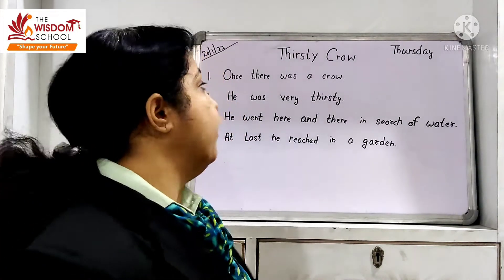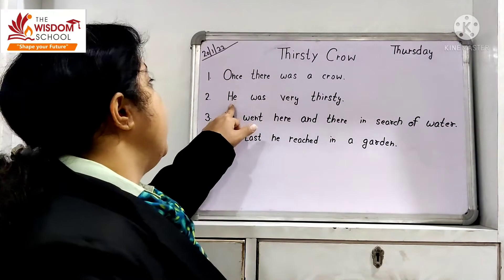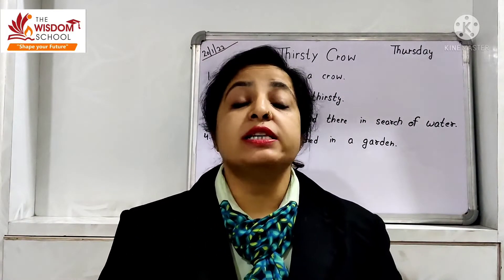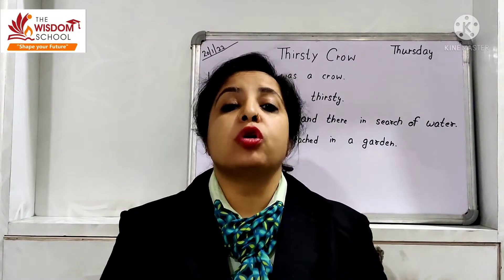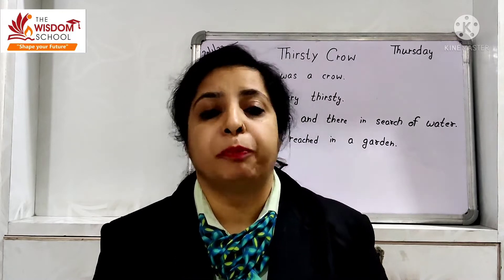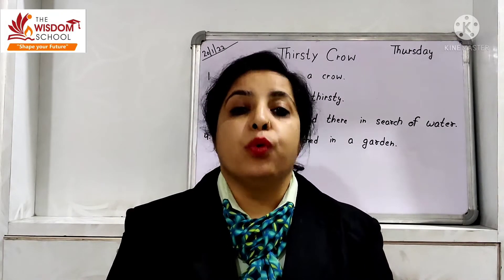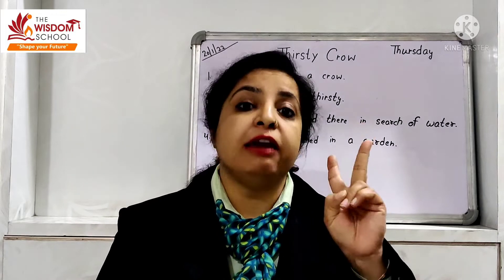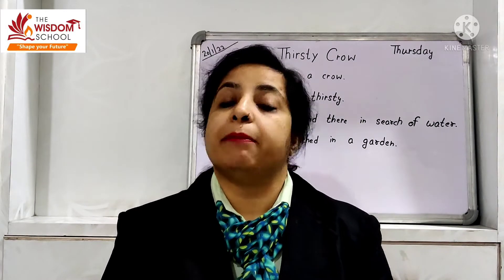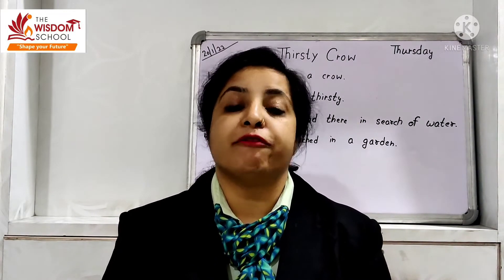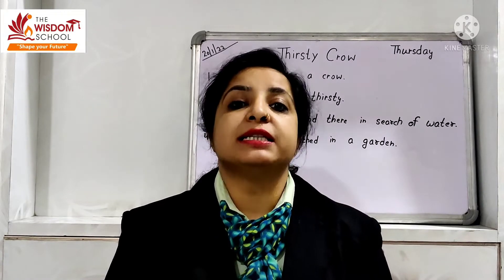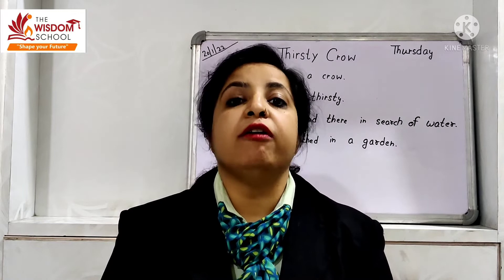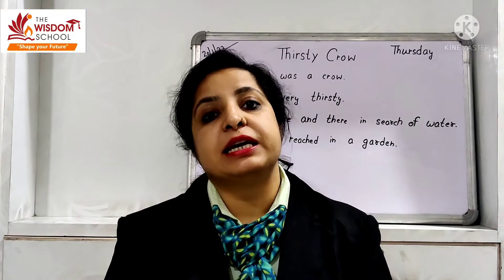Okay. Next line hai humari: He was very thirsty. He was very thirsty. Usko bahut pyas lagi thi. Woh bahut pyaasa tha. Theek hai? Once there was a crow. He was very thirsty. Abhi yeh two lines achhe se learn karo. Humari first line kya hai? Once there was a crow. Second: He was very thirsty.